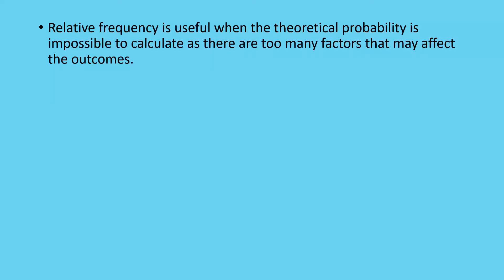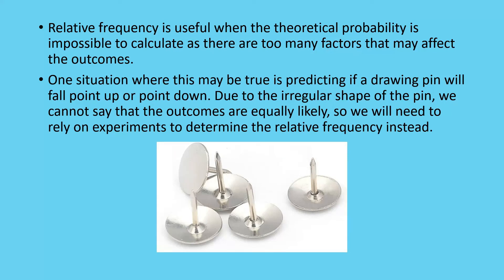So where it's useful is that it can be used to calculate things that would be impossible to use theoretical probability for. One of these examples would be trying to determine whether or not a drawing pin would fall point up or point down when dropped. Due to the size and shape of a drawing pin, it's not equally likely that things will land or they will land perfectly.